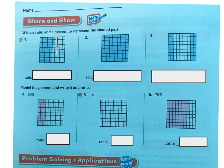Let's write ratios and percentage to represent the shaded part. So if I'm looking right here, I'd have to actually count them. We know that each one of these is 10. So I can count by 10.